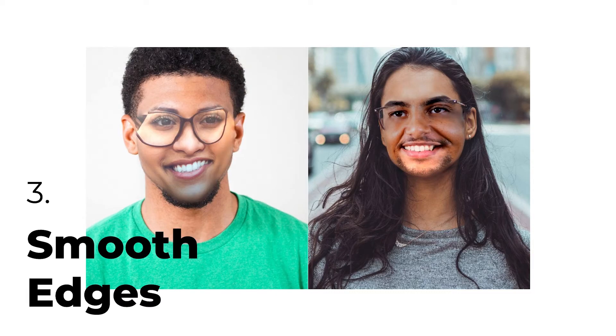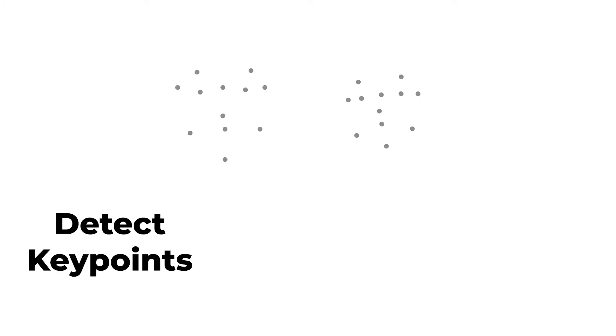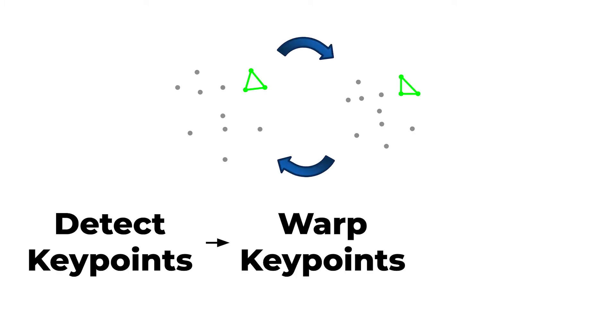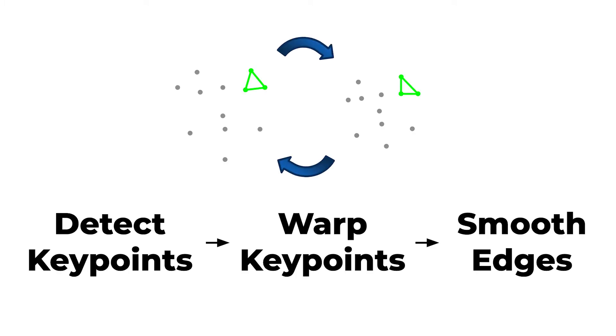After applying gradient-domain fusion to this image, we get a more realistic version. To recap: detect key points, warp key points, then smooth the edges.